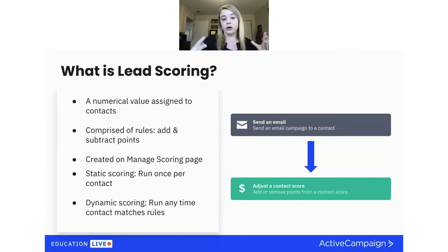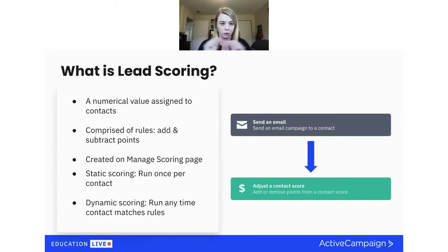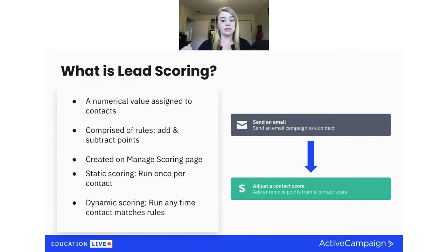The overall approach to creating scores: think about what's most important to you, what you want to give the most points for, how long your sales cycle is, and how long you'll leave those scores up. Scores in ActiveCampaign run once per contact once you make them, unless they match your rules, in which case you can create rules in an automation where people are able to have that score run multiple times.